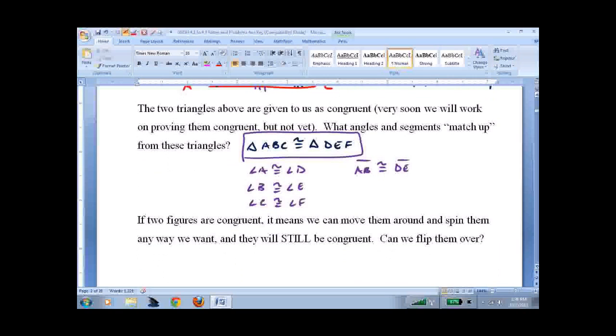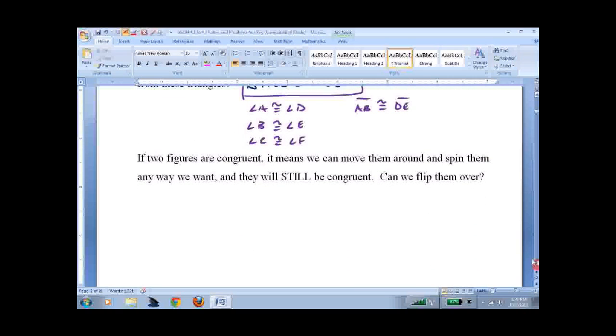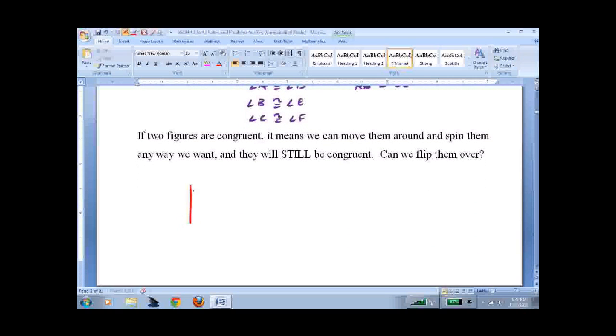And one of the biggest questions I get is, I get this congruent thing. Two shapes are congruent. But what if I have a triangle like this? I flip it over. So it looks like that. Are they still congruent? The answer is yes.